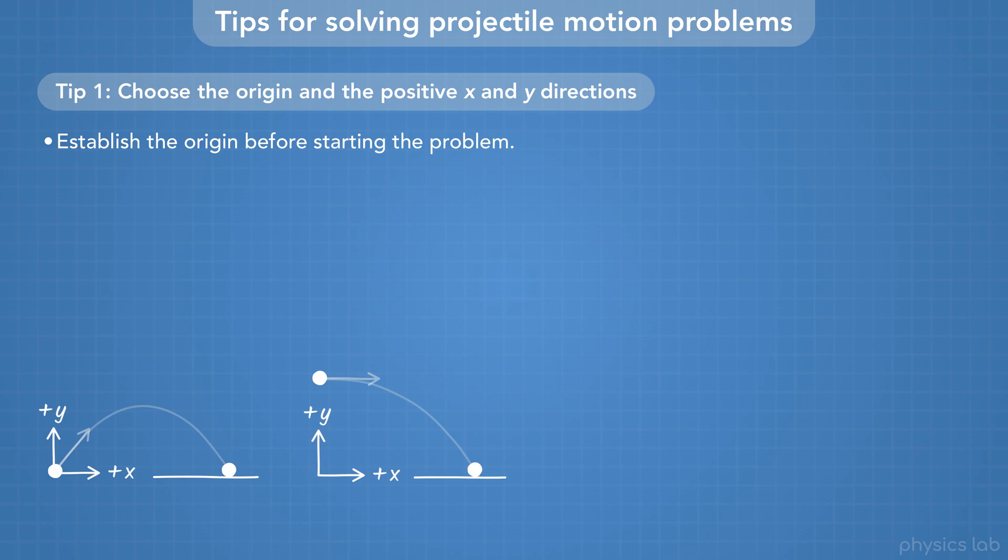It's common to set up the origin on the ground, and so the initial X position is zero. Once you set up the origin, stay consistent with the positive and negative directions, and the positive and negative values in the equations.